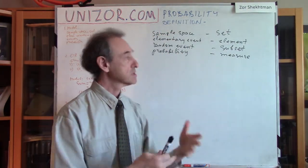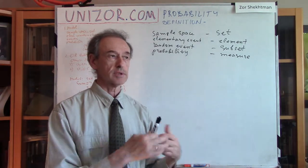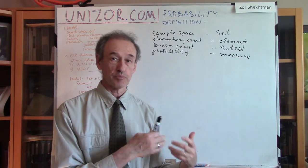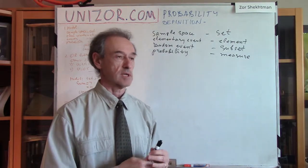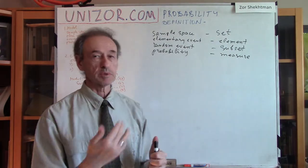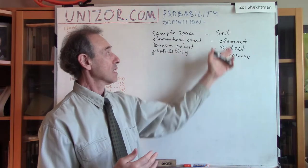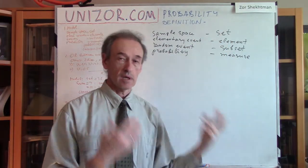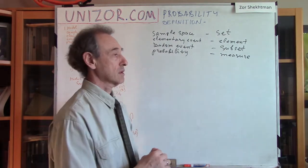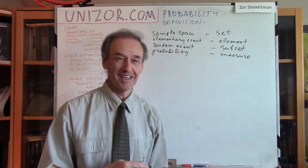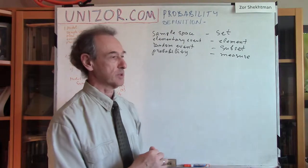We are using this language to translate something intuitive — like probability and random events — into a more formal mathematical language using concepts of sets, elements of sets, subsets, and the additive measure. This is the mathematization of the more intuitive concepts of the theory of probabilities.